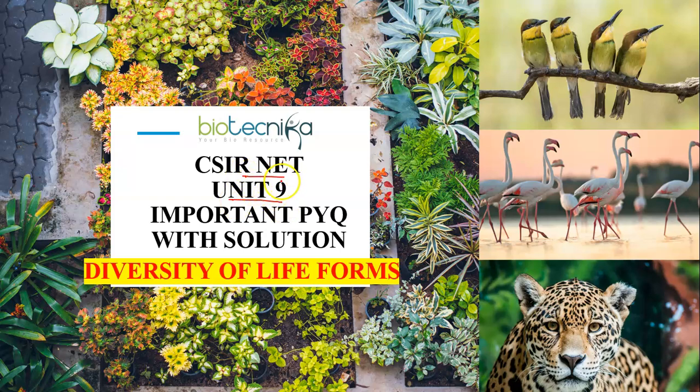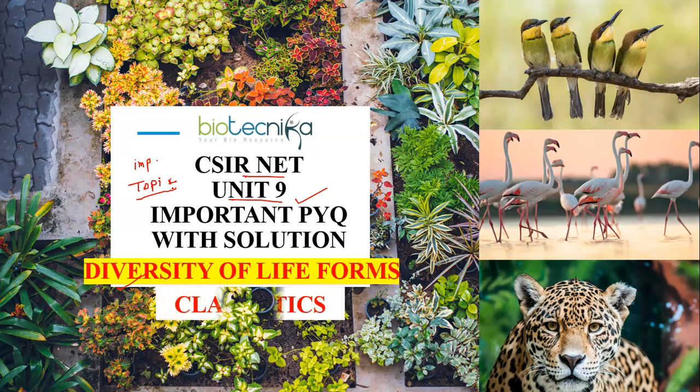Unit 9 of CSIR NET Life Science syllabus is about diversity of life forms and is considered to be an advantage for CSIR NET aspirants having botany or zoology background. If you are preparing for Unit 9 and don't have a zoology botany background, then don't worry. Even if you have a microbiology, biotechnology, biochemistry or any other educational background, you can easily prepare Unit 9. All you need to do is emphasize on the important topics and one such important topic from where the questions are most frequently asked every year in CSIR NET Life Science exam is cladistics.